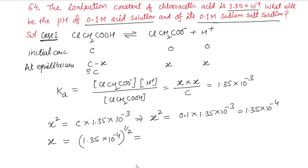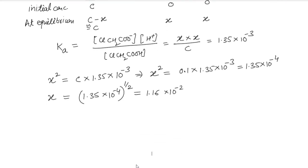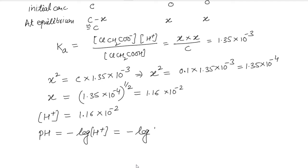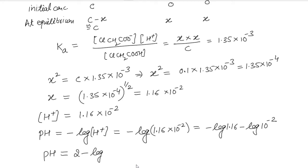So x equals the square root of 1.35×10⁻⁴, which gives 10⁻² times the square root of 1.35. The square root of 1.35 is approximately 1.16. Therefore the concentration of H⁺ is 1.16×10⁻². pH = −log(1.16×10⁻²) = −log(1.16) − log(10⁻²) = 2 − log(1.16).